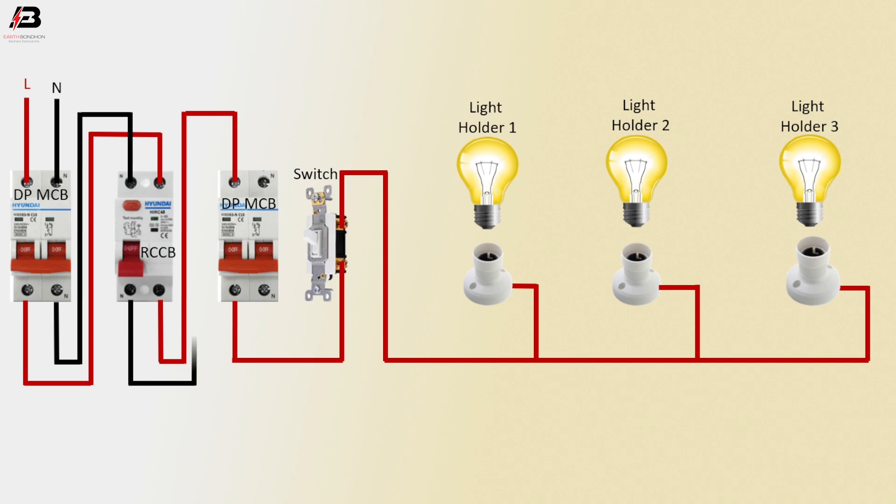Neutral connection outgoing from double pole MCB circuit breaker to connect light holder 3, light holder 2, and light holder 1.